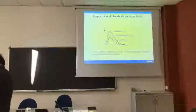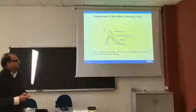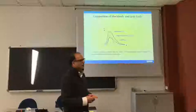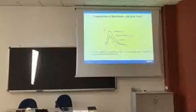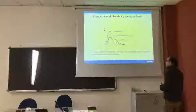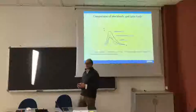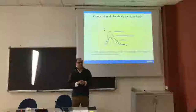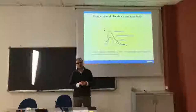A grey body in the traditional sense has epsilon constant but less than one, and it maintains more or less the shape of the Planck distribution. The correct name for the earth's surface and atmosphere is actually a selective radiator, meaning that epsilon is a function of lambda.